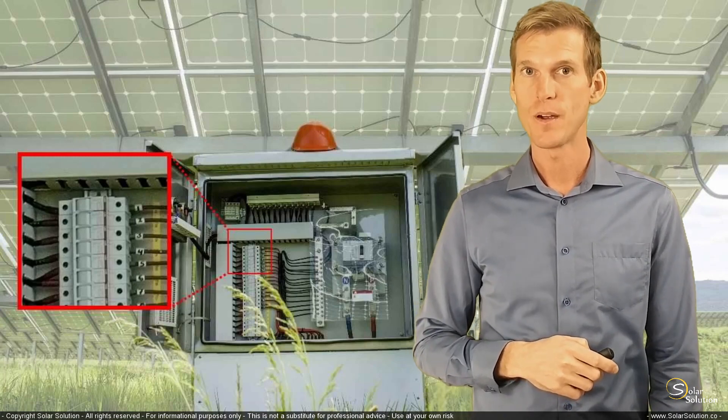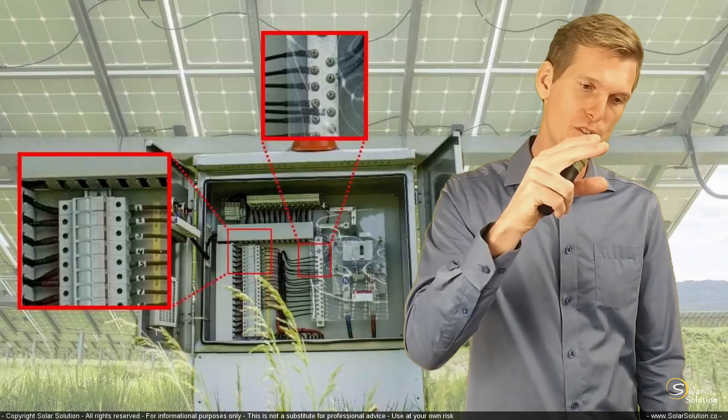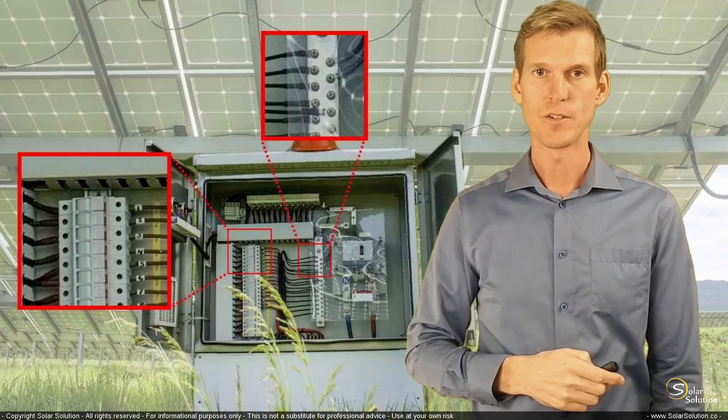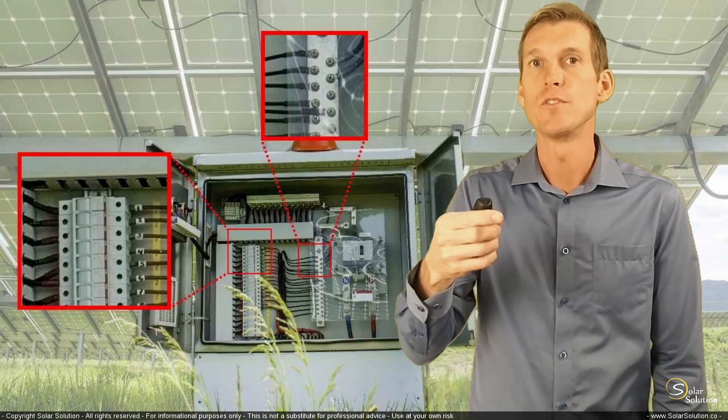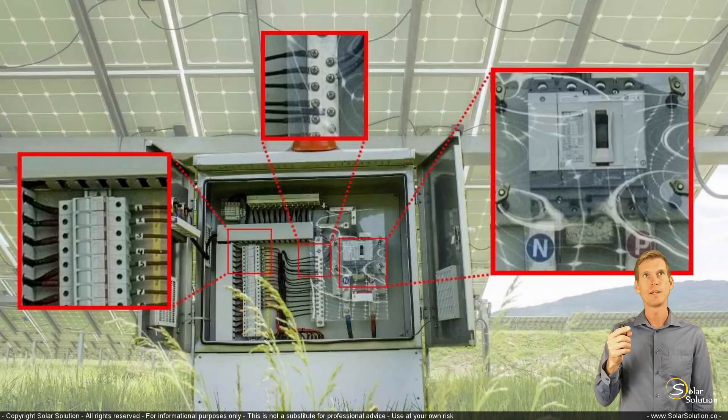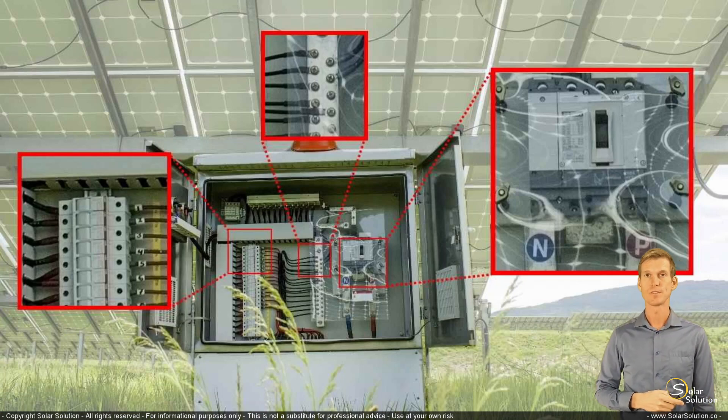You can see the bus bar where you combine all the circuits into one. All the separate strings are combined into one main circuit going from there on. The main circuit goes through the main switch or breaker before it goes out. The main switch or breaker is of a much higher capacity than all the individual fuses in this box.